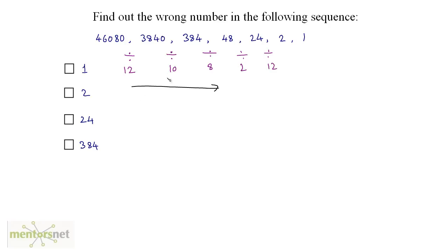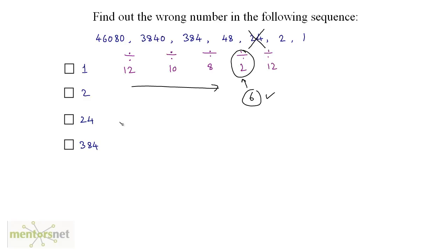The divisors are 12, 10, 8 — decreasing by 2 each time. So the next divisor should be 6, not 2. Had this been 6 it would be correct, but since the divisor used gives 24, that number is wrong. The wrong number in this sequence is 24.